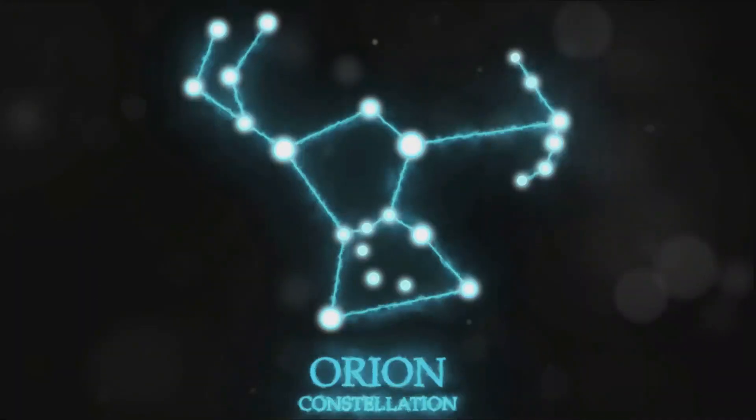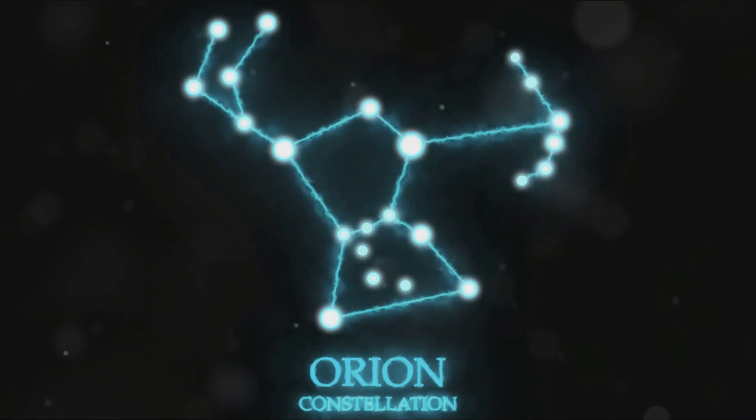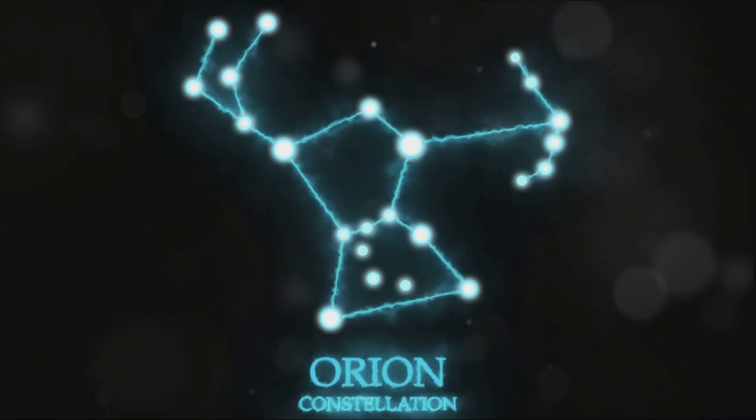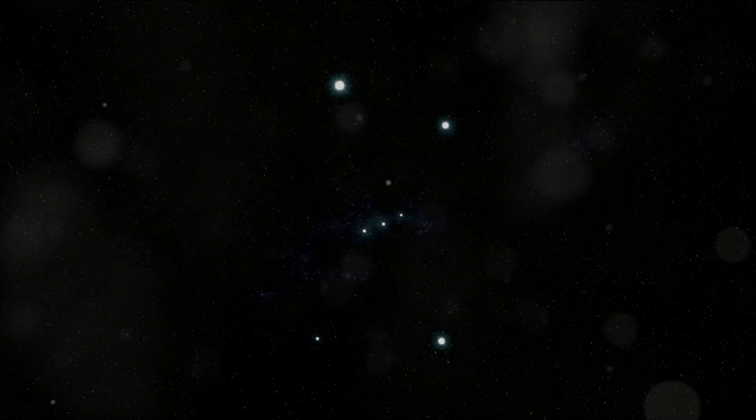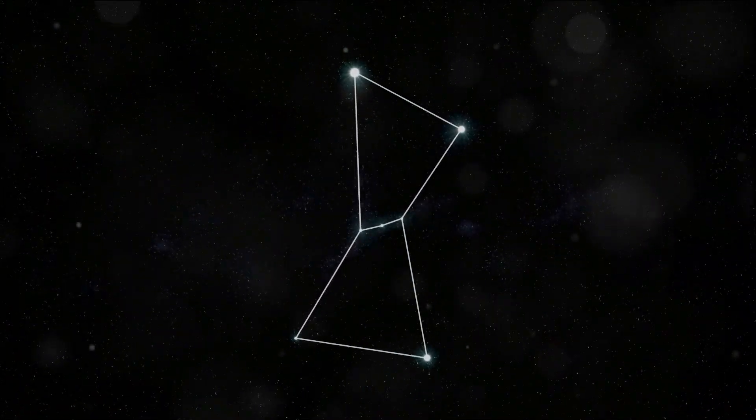Your first clue to finding constellations is to look for the brightest stars. They're like the anchors of the constellation. For example, the constellation Orion, named after a hunter from Greek mythology, is easy to spot because of its three bright stars in a straight line, known as Orion's Belt.